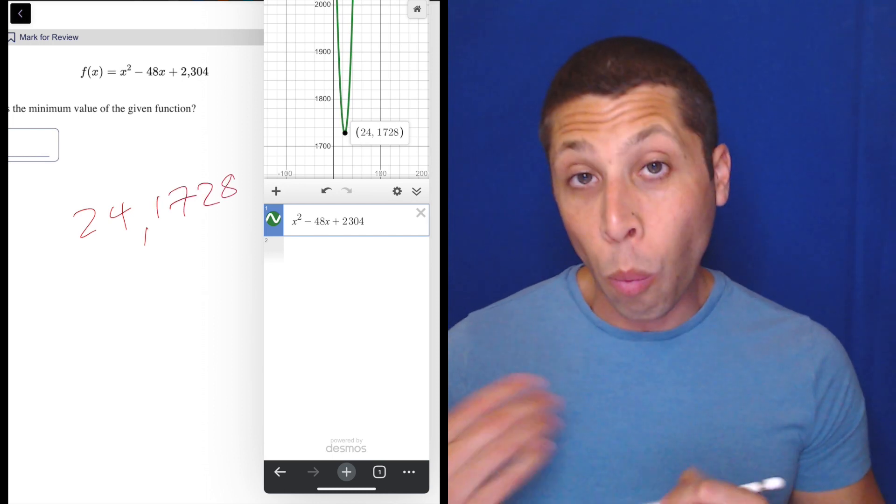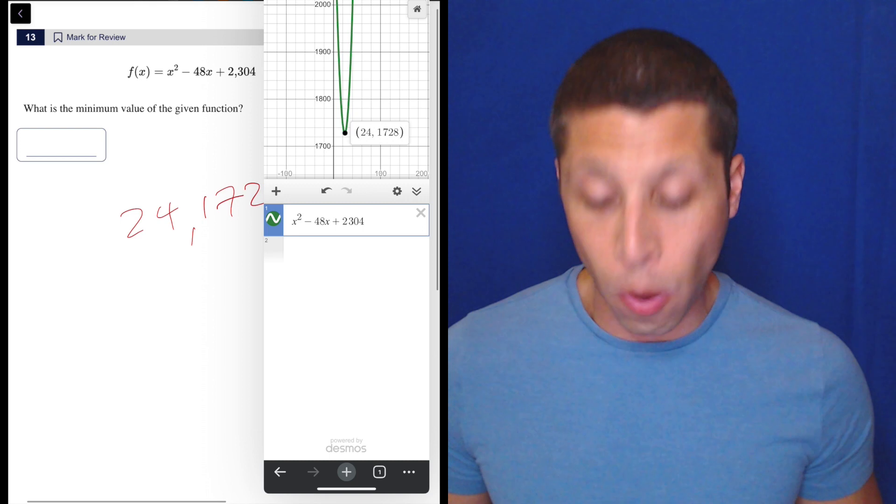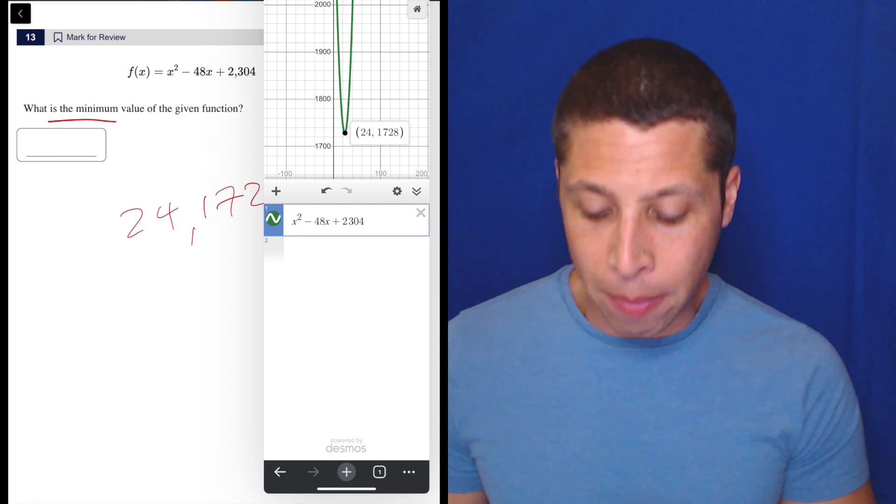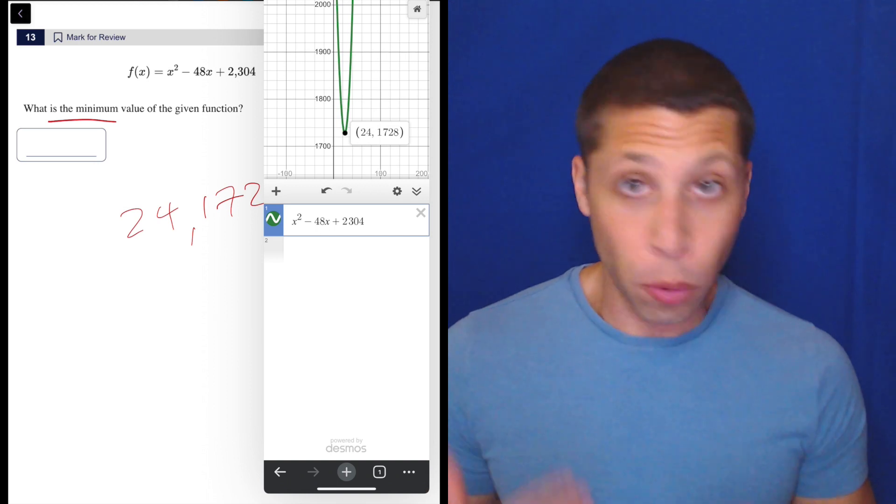So we got to be careful. What are they asking for? Are they asking for the x or the y? The SAT asks for both; it just depends on the question. Here they're asking what is the minimum, meaning we want the y coordinate.